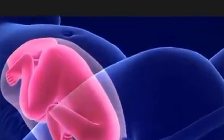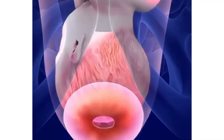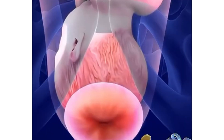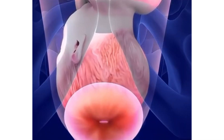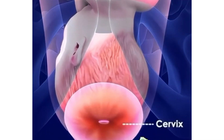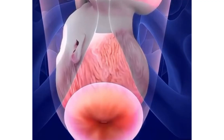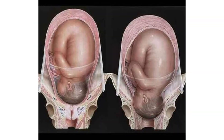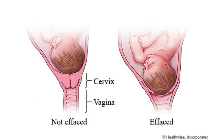Normal labor is divided into three stages. The first stage involves cervical dilation, from the onset of true labor contractions to full cervical dilation. The latent phase begins with mild, irregular contractions; the cervix dilates from zero to four centimeters, and effacement — the thinning of the cervix — begins.